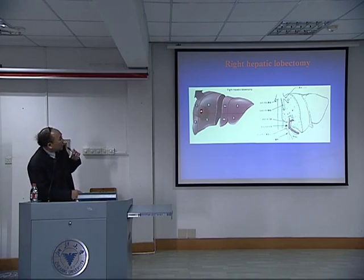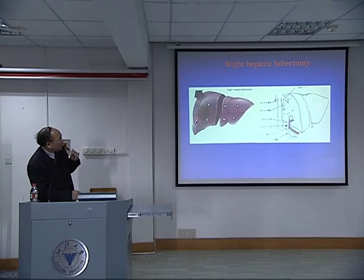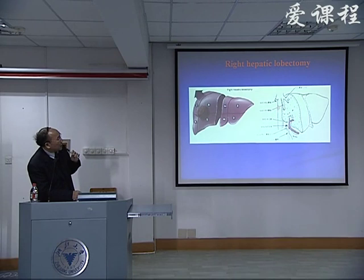Here is the right hepatectomy. If a tumor is located in segments 5, 6, 7, and 8, we do a total right hepatectomy. If we do segments 1 and 5, a partial resection may be enough. If we do segment 6, it is not enough — we must take 4 segments together, so we do right hepatectomy. Here I show the middle hepatectomy, left hepatectomy, and the IVC. So the right tumor is taken away — this is the classic right hepatectomy.